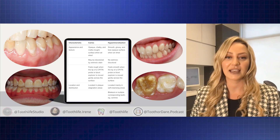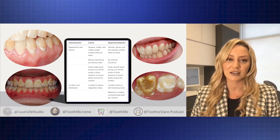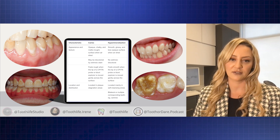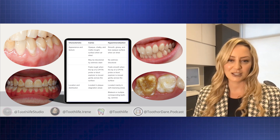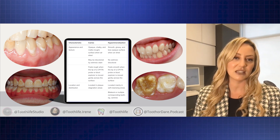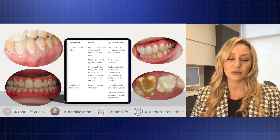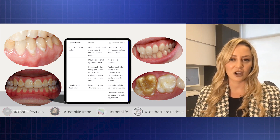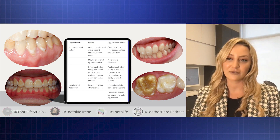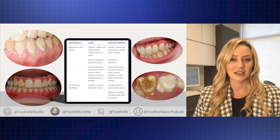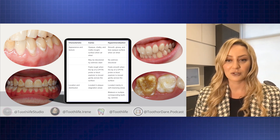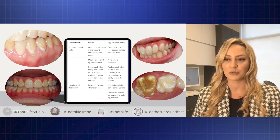When I look at teeth and characterize them in my chart notes, I talk about the location, the description, and the appearance. I don't stick an explorer in a white spot lesion because I don't know if it's mineralizing or demineralizing — and maybe I'm contributing to that caries process. So looking at the chalkiness is an opportunity for us to use procedures like resin infiltration or glass ionomer placement to occlude those tubules and help with remineralization.